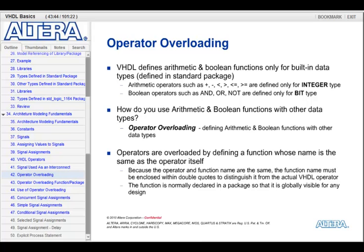In the VHDL built-in libraries, certain operators can only be used with certain data types. For example, arithmetic operators can only be used with data type integer, and Boolean operators can only be used with type bit. But for other data types, like standard logic, we have to use operator overloading. Operator overloading allows the same operator to be used with multiple data types. This is done by declaring a function whose name is the same as the operator itself, enclosed in double quotes.